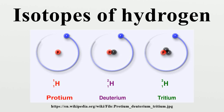Hydrogen-6 (6H) decays either through triple neutron emission into hydrogen-3 or quadruple neutron emission into hydrogen-2, and has a half-life of 290 yoctoseconds.